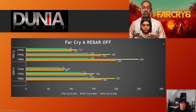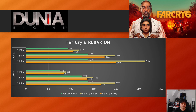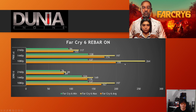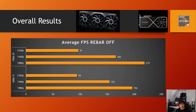Last is Far Cry 6, using the Dunia engine. This title clearly favors the Radeon card — it wins outright with resizable bar off, and enabling it doesn't change the narrative. There is some scaling visible in the maximums, going from 249 to 264 at 1080p, and averages tick up slightly. However, both cards saw a one FPS regression at 1080p average — so this game doesn't scale much with resizable bar.